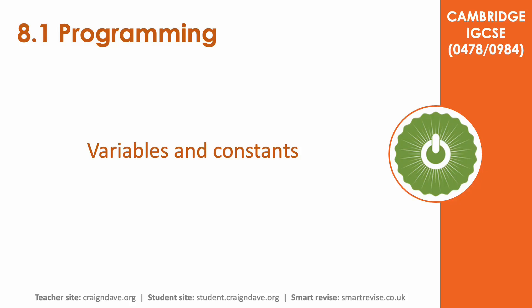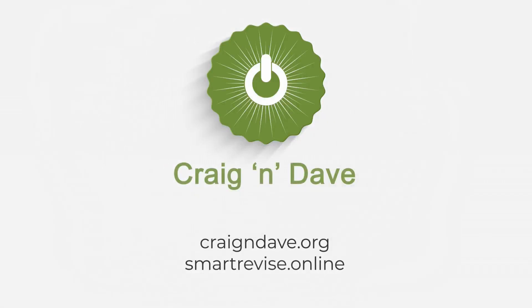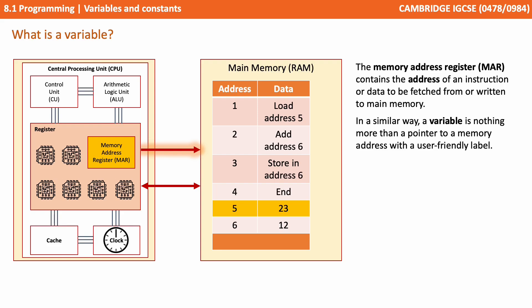In this video, we look at variables and constants. The memory address register MAR contains the address of an instruction or data to be fetched from or written to memory. In a very similar way, a variable is nothing more than a pointer to a memory address with a user-friendly label.